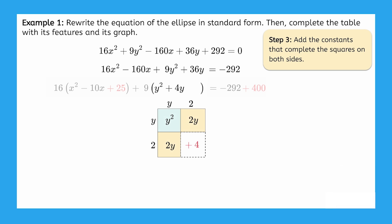We complete the square by adding 4 inside the parentheses. However, what is this 4 actually adding on the left side of the equation? We're adding 9 times 4, which is 36, so we add 36 on the right side too.